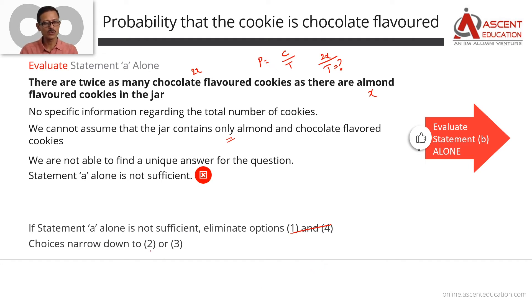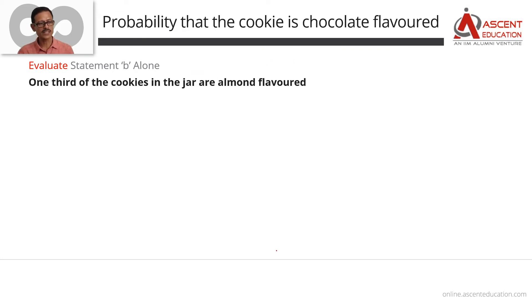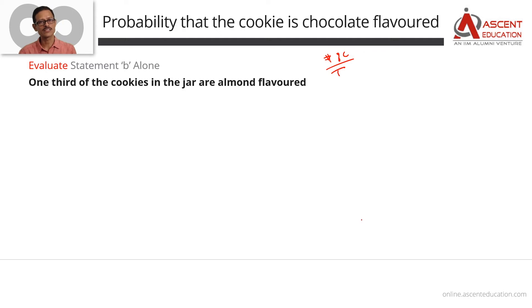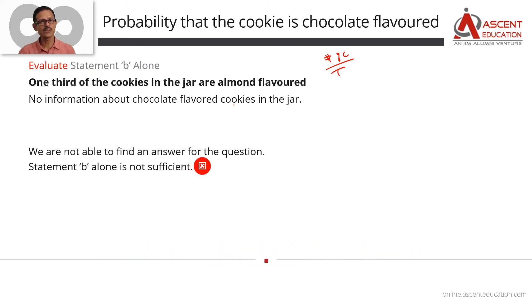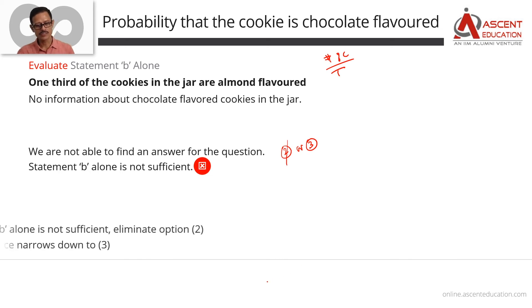Statement B says one-third of the cookies in the jar are almond-flavored. What is the number of chocolate-flavored cookies divided by the total number of cookies? If we know the fraction of almond-flavored cookies, we still don't know the number of chocolate-flavored cookies. So Statement B alone is also not sufficient. Since B alone is not sufficient, we eliminate answer option 2. That leaves us with answer option 3.